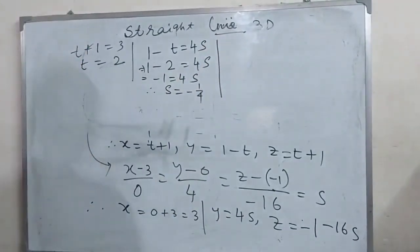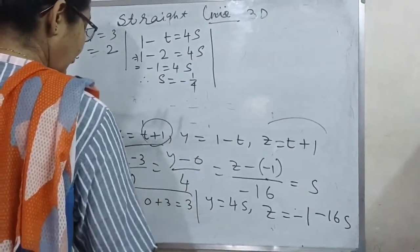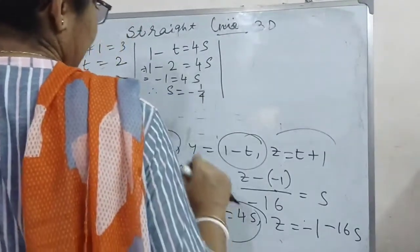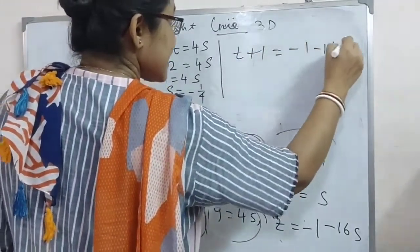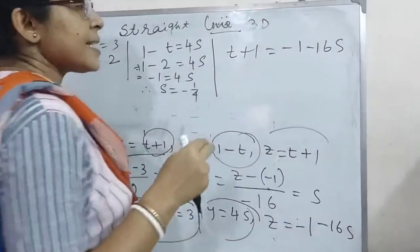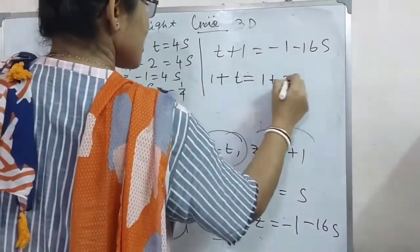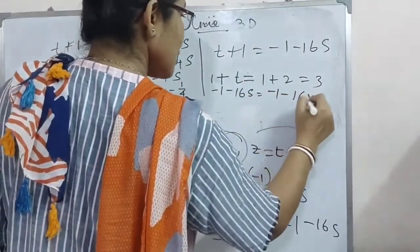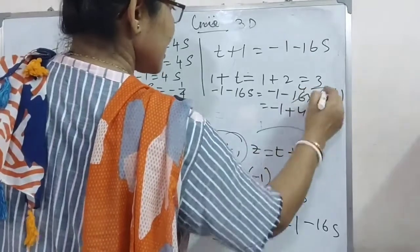From these two equations I get the values of t and s. Now I check the z-coordinates: t plus 1 equal to minus 1 minus 16s. Substituting: 1 plus 2 equal to 3, and minus 1 minus 16 into minus 1 by 4 gives minus 1 plus 4 equal to 3. Both are the same, so the two straight lines do intersect.